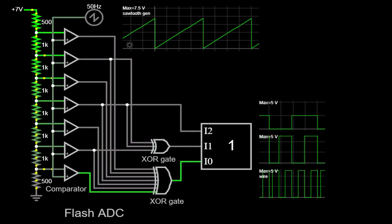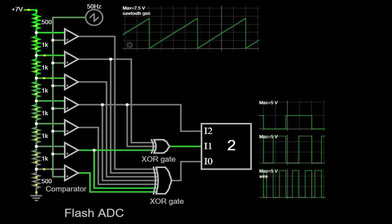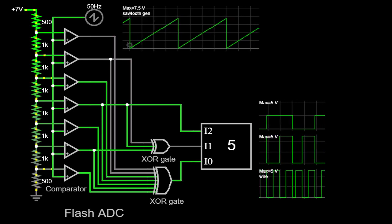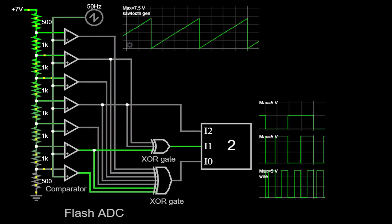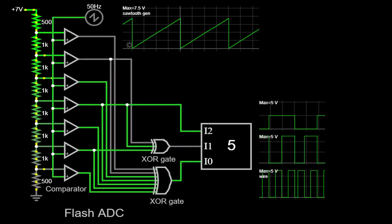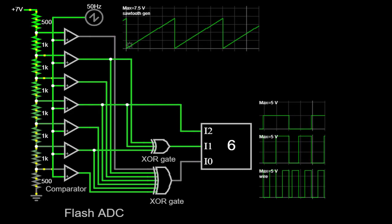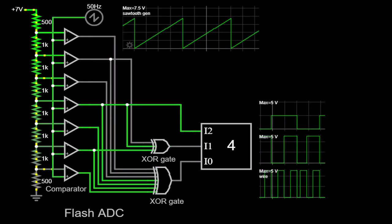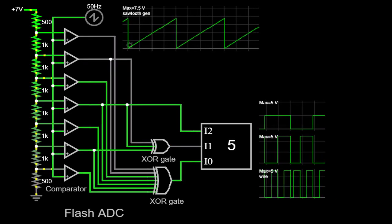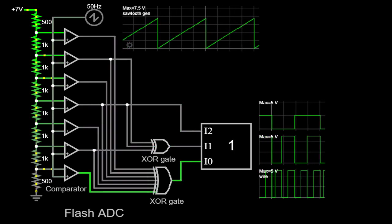In order to effectively illustrate the operation of a Flash ADC, we will be utilizing a simulator. This simulator will allow us to visualize the conversion process in real-time, enhancing our understanding of how the Flash ADC functions. By replicating the behavior of a Flash ADC, the simulator enables us to observe the input voltage, the corresponding digital output, and the internal processes taking place within the ADC itself. This virtual environment serves as an invaluable tool for studying and comprehending the intricacies of Flash ADCs.